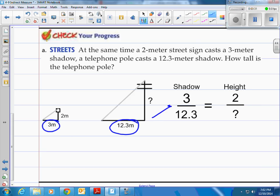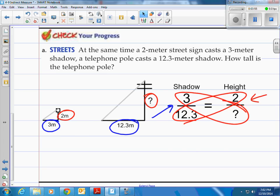And then let's take the height of the actual sign and the height of the telephone pole and put it over as our other ratio right here. And of course cross products and solve. And when you do so you get that that telephone pole is going to be 8.2 meters tall.